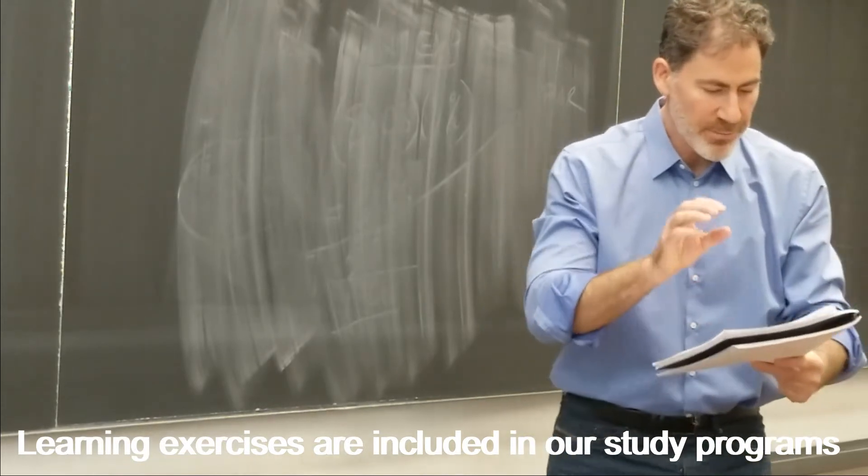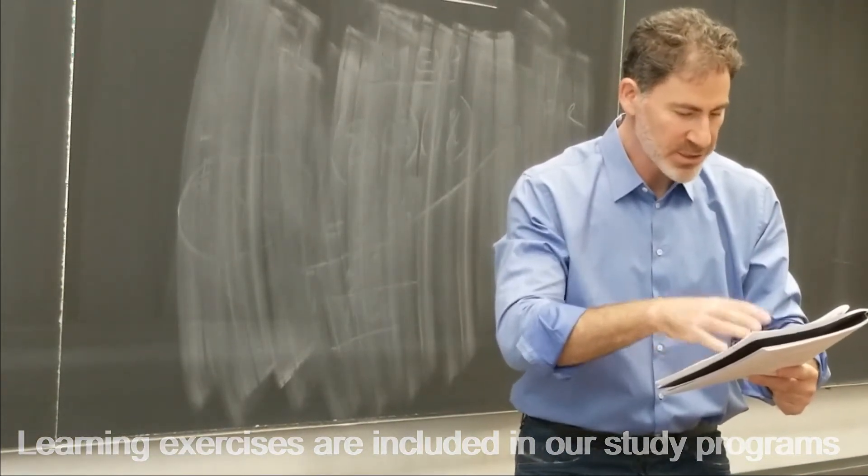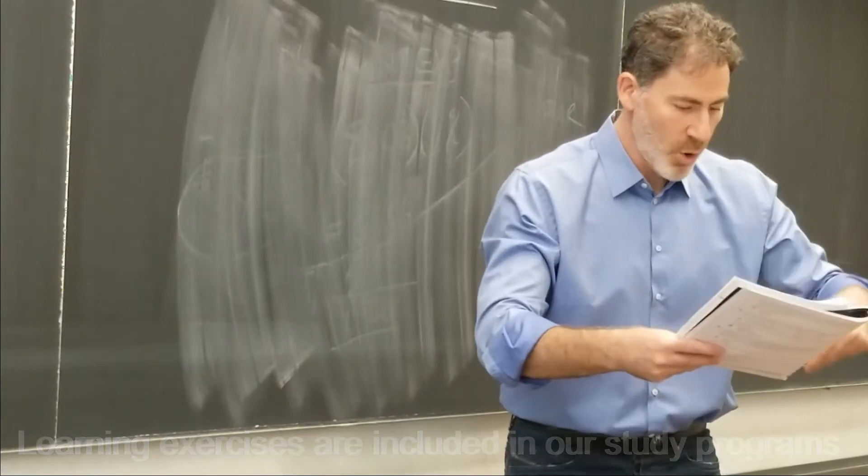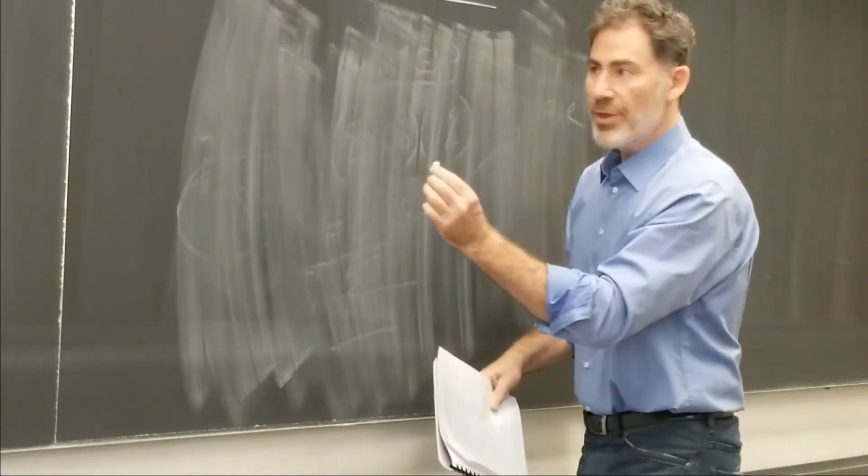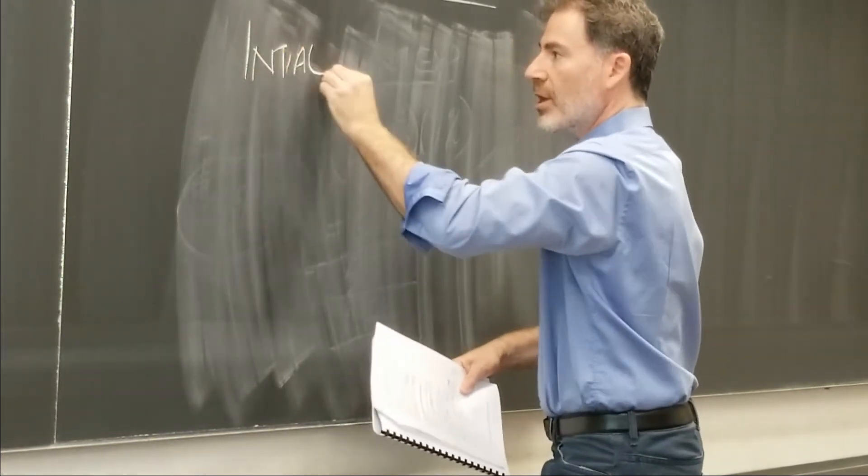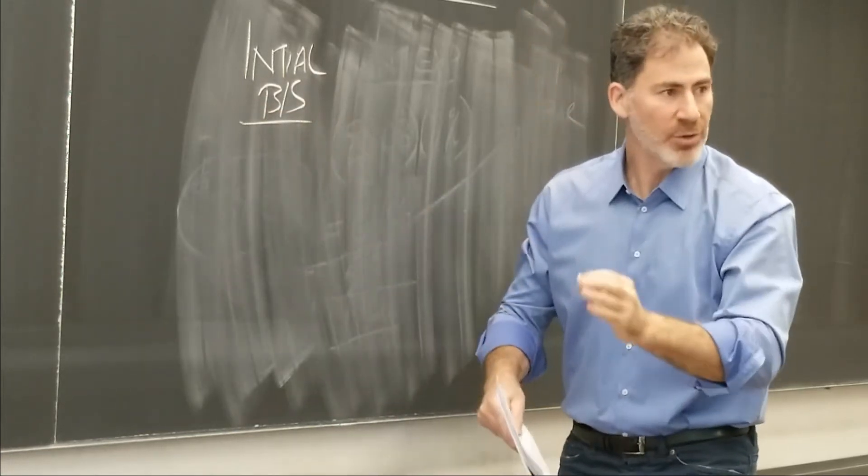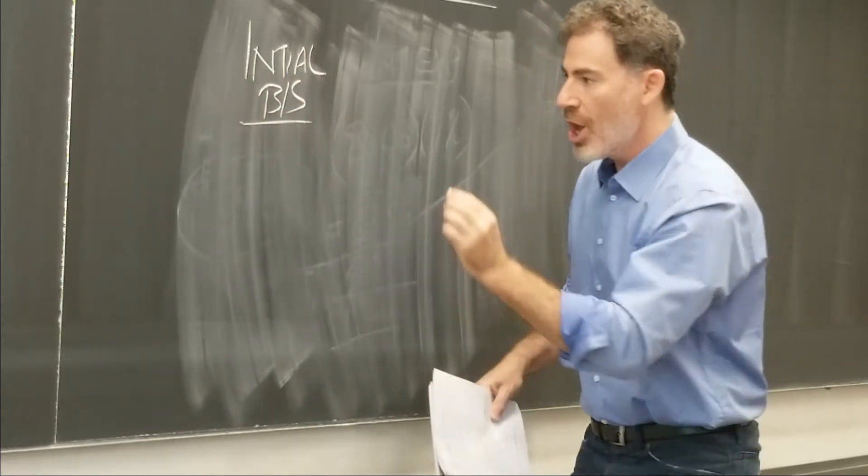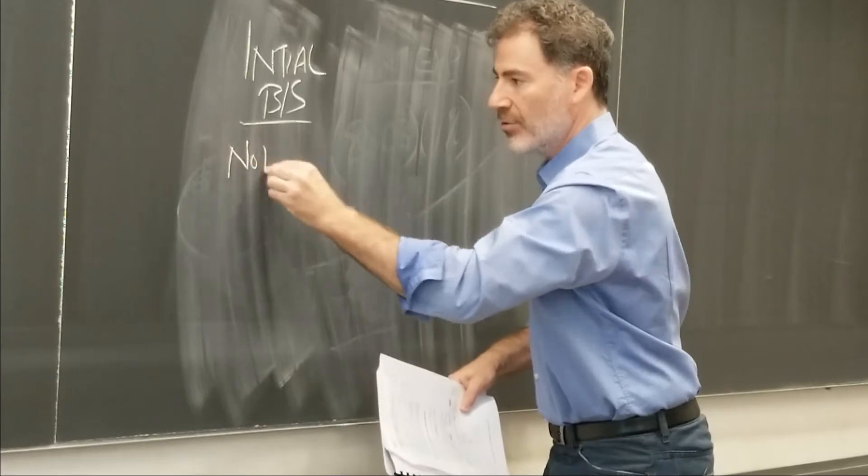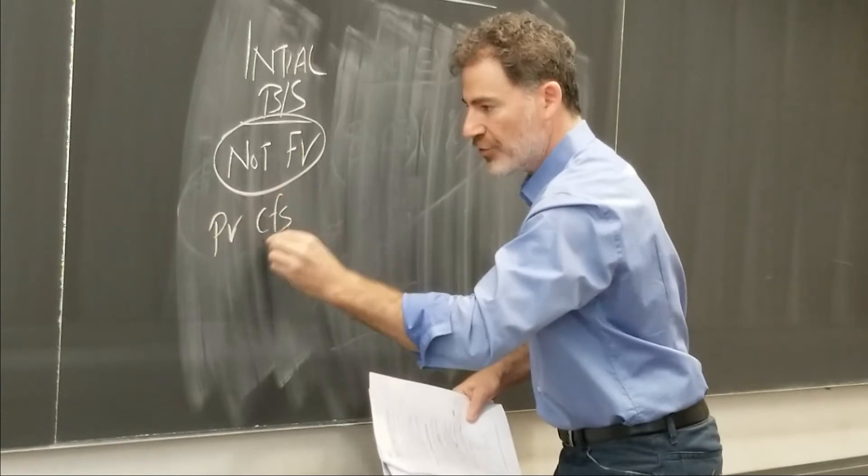Our learning outcome statement wants us to know about the initial recognition, measurement, and subsequent measurements. So here's what we need to focus on. For the bonds, the initial measurement, it goes on the balance sheet at the present value of the future cash flows, not the face value. So, not face value. This is critical. PV of cash flows.